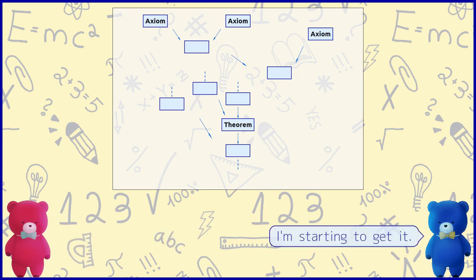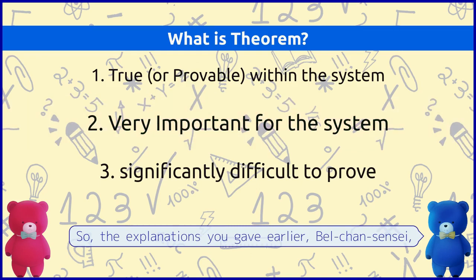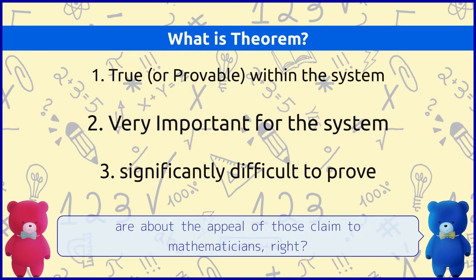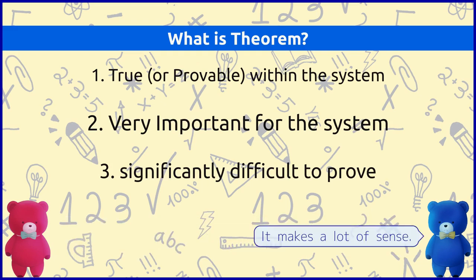I'm starting to get it. So, the explanations you gave earlier are about the appeal of those claimed to mathematicians, right? Yes, I think that's a good image. It makes a lot of sense.